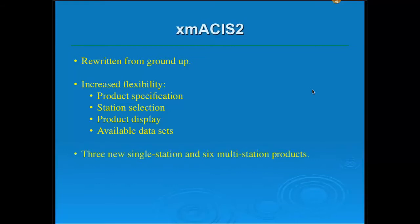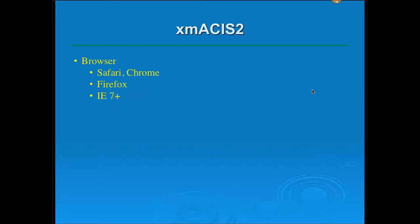We have added some new products — three brand-new single-station products and six multi-station products in XMASIS II. We also enhanced many of the existing products, so they should be a lot more useful now. As far as browser support, XMASIS II was developed using Safari and Chrome, and so we have the most confidence in those two browsers. We have also tested it quite a bit in Firefox without any problems. It's only had some limited testing in Internet Explorer, but we expect everything to work from version 7 on up. We think all the major browsers should operate just fine.